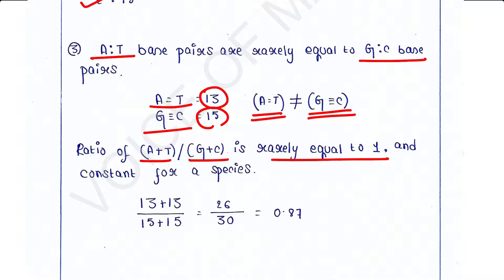You can calculate it: A plus T is 13 plus 13, and G plus C is 15 plus 15, giving us 26 divided by 30, which equals 0.87. So this ratio is not equal to 1 — it can be less than 1 or more than 1 — but it is constant for a species.